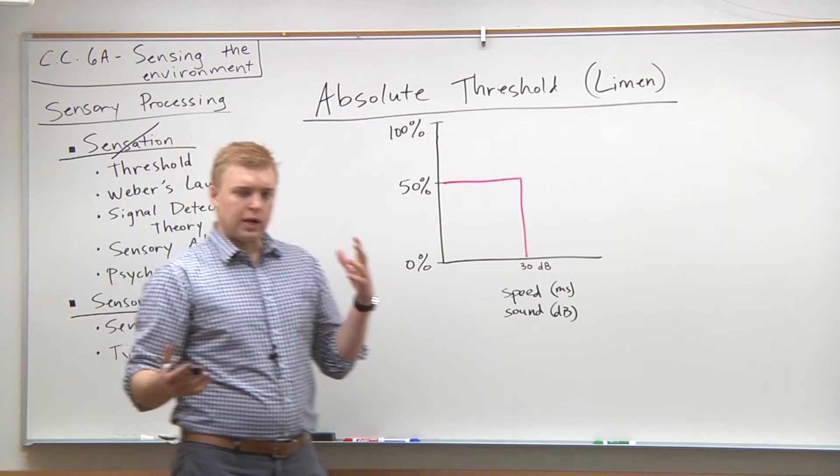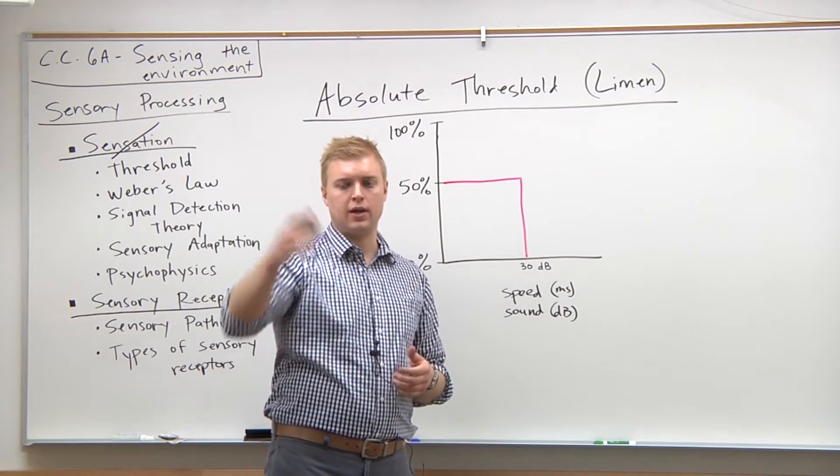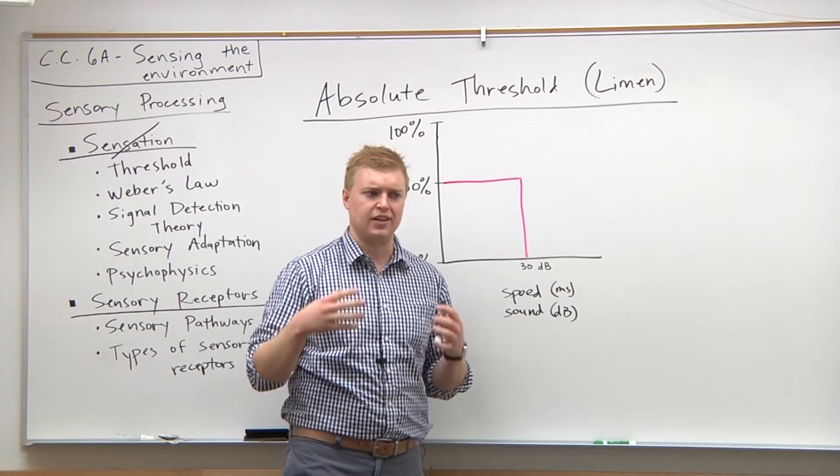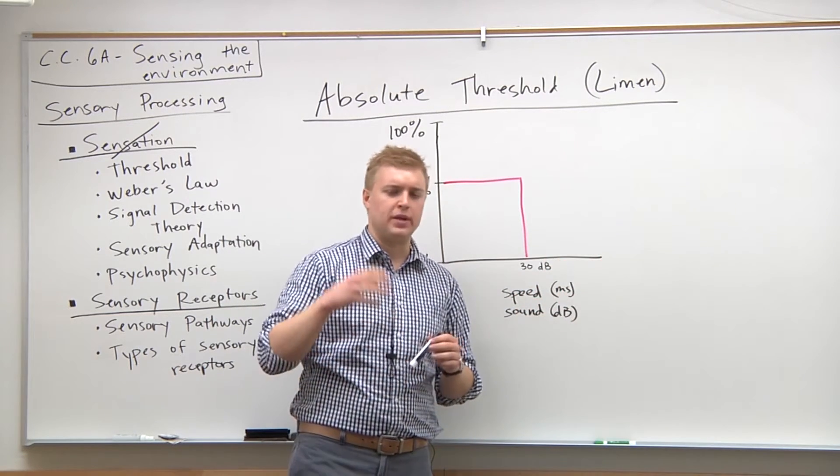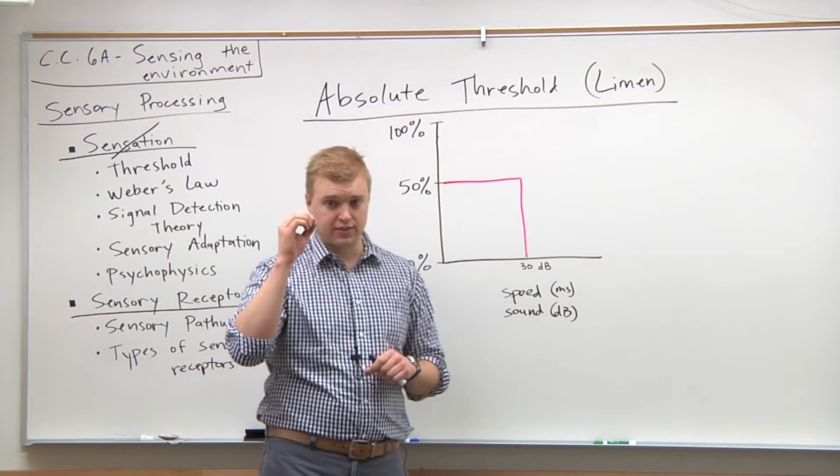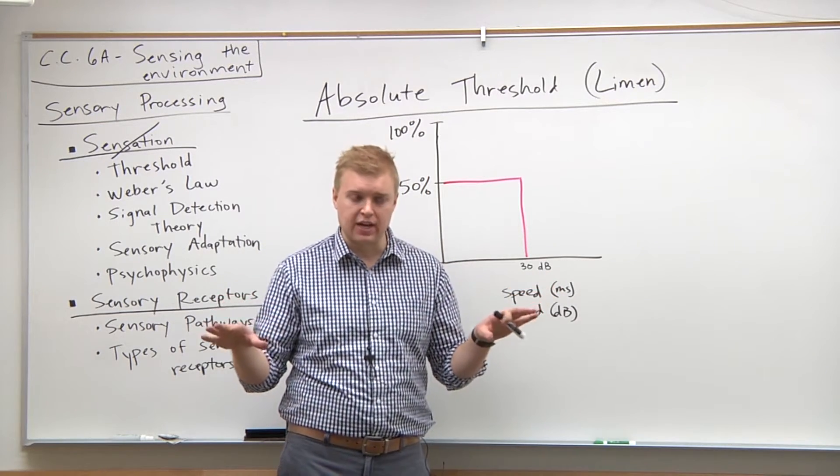Other examples of absolute thresholds: for sight, I think they did a test, it's a candle 30 miles away on a dark night. That would be the absolute threshold for sight, so we can detect that half of the time.